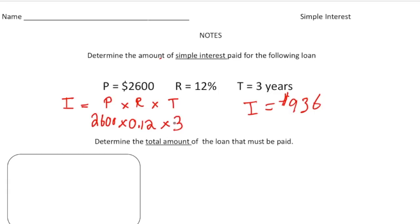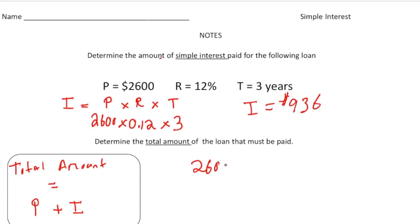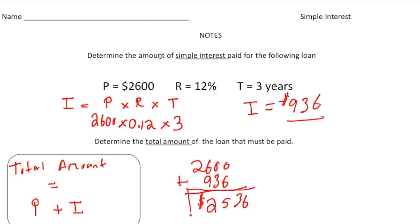So the interest equals $936 — that's the fee to borrow $2,600. Part two asks for the total amount of the loan that must be paid. The formula is: total amount equals principal plus interest, or P plus I. So that's $2,600 plus $936, which equals $3,536. That's the total amount you'd have to pay back over three years. Now pause the video and try the 'your turn' problem — good luck!